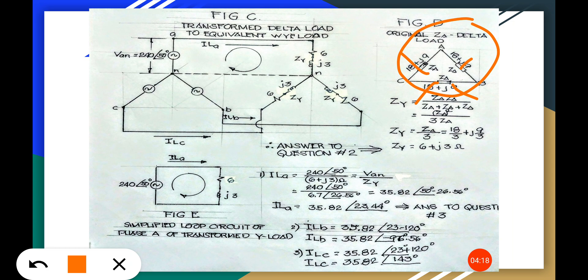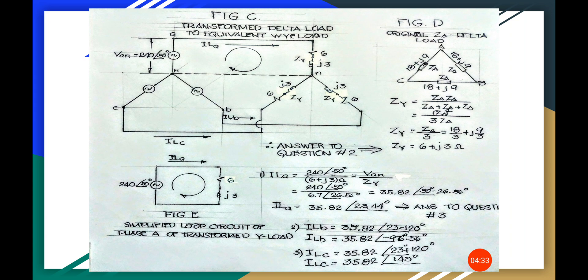Za plus Za plus Z and you will get this Z/3. Then you have to divide the impedance of this delta by three and you will get the Zy.